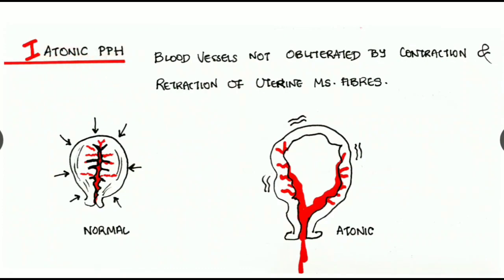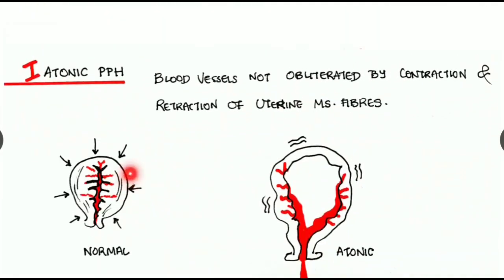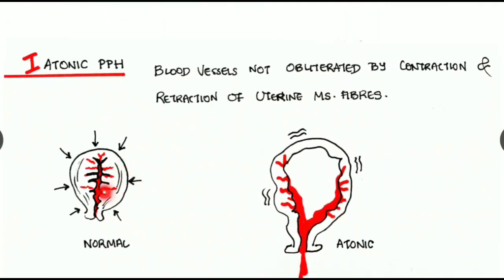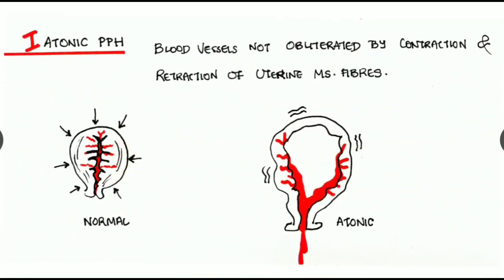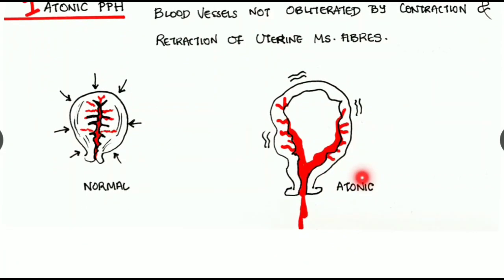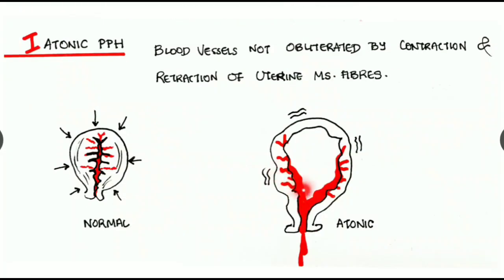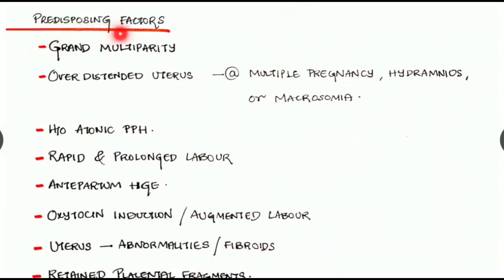In atonic postpartum hemorrhage, there is loss of tone of the uterus, hence the blood vessels are not obliterated by the contraction and retraction of the uterine muscle fibers. Normally the uterus contracts and obliterates blood vessels preventing further hemorrhage, but in an atonic uterus there is loss of tone, hence the blood vessels are not obliterated and there is heavy hemorrhage.